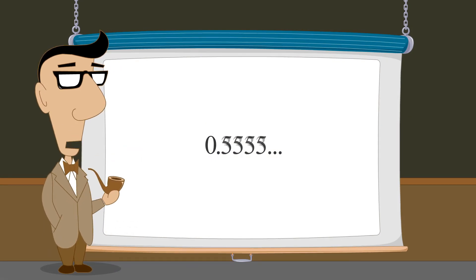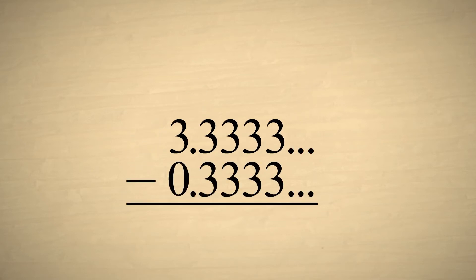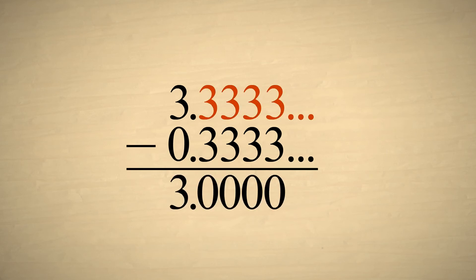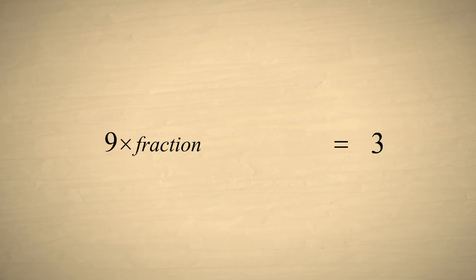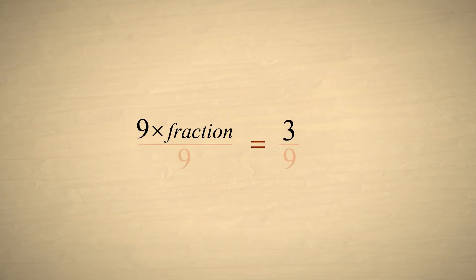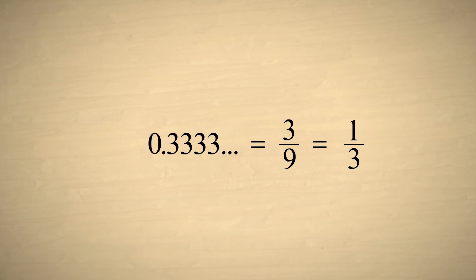Let's try this again with a repeating sequence of threes. As we did in the previous example, we eliminate the one repeating digit by multiplying by ten one time and then subtracting the original number. This eliminates all the repeating threes to the right of the decimal point. So ten times the fraction minus the fraction equals three, which simplifies to nine times the fraction equals three. Dividing each side by nine tells us that our fraction is equal to three-ninths, which can be reduced to one-third.